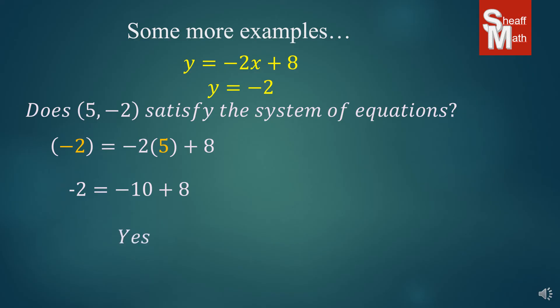Now, our second equation doesn't have an x in there. This y equals -2 is a straight, flat line going across the graph, going through -2. And right off the bat, if you see that your y in the point is a -2, then it's a yes.